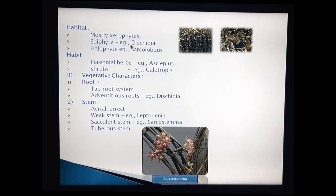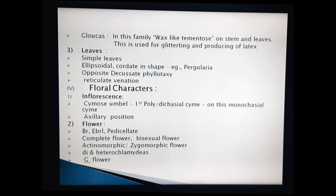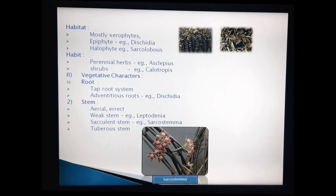See the picture beside — this is Dischidia, grown as an epiphytic plant. What is meant by an epiphytic plant? Some plants are grown on other larger plants. That type of plant is known as an epiphytic plant. The best example of an epiphytic plant in the Asclepiadaceae family is Dischidia.